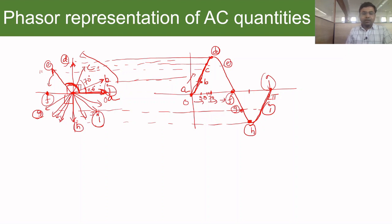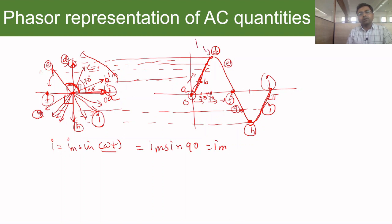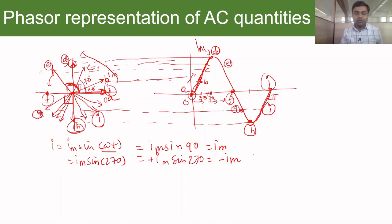Mathematically, the current is expressed as I = Im·sin(ωt). When θ = 0, the value is zero. When θ = 90°, sin(90°) = 1, giving the peak value Im. When ωt = 270°, sin(270°) = −1, giving the negative peak −Im.